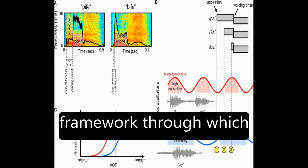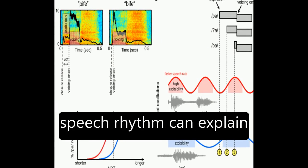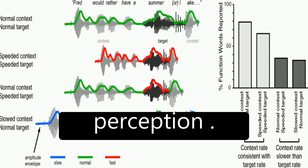The article suggests a framework through which neural entrainment to speech rhythm can explain effects of speech rate on word and segment perception.